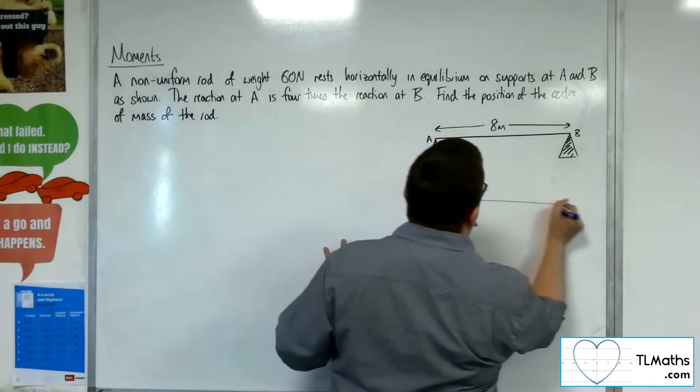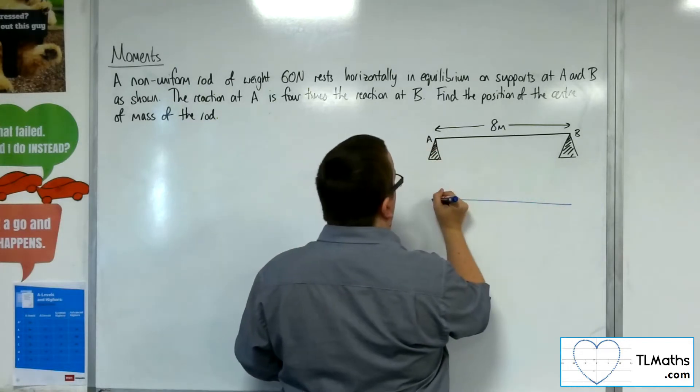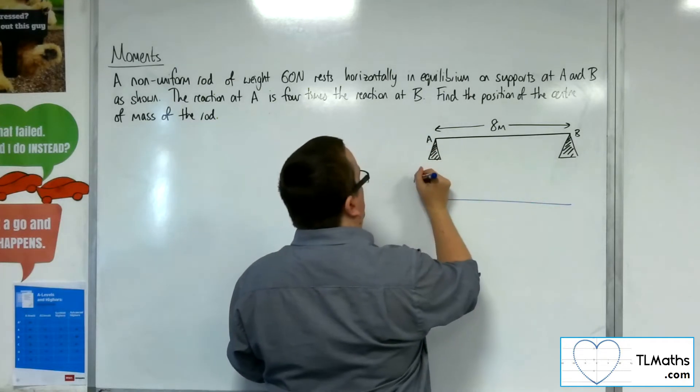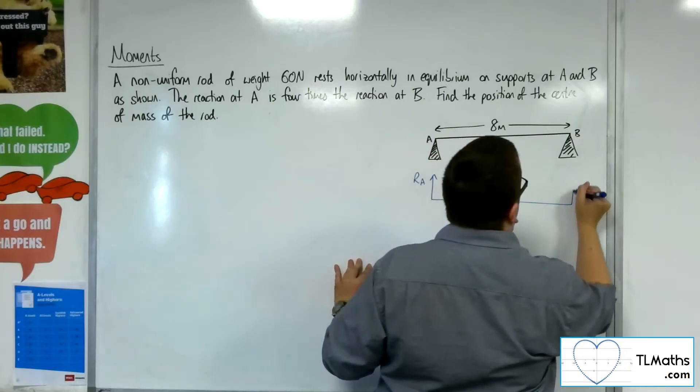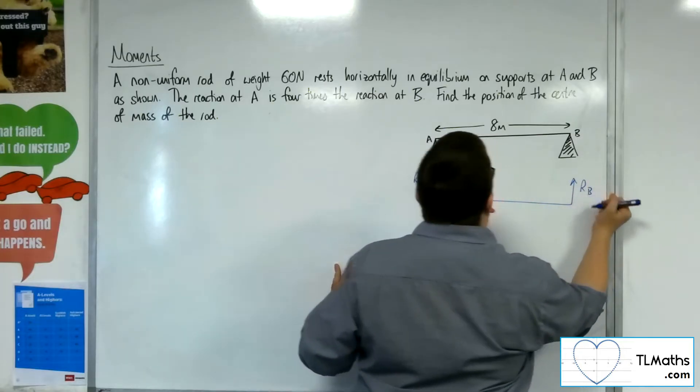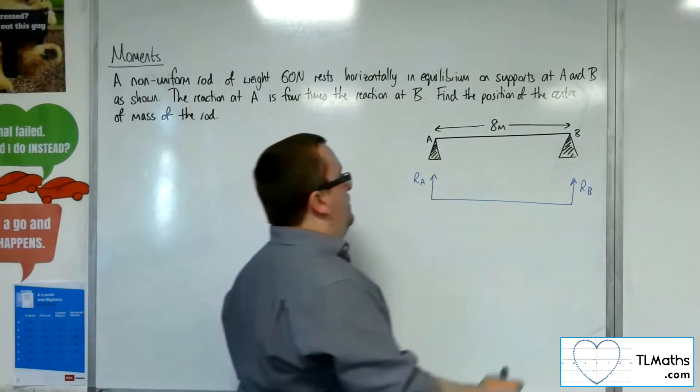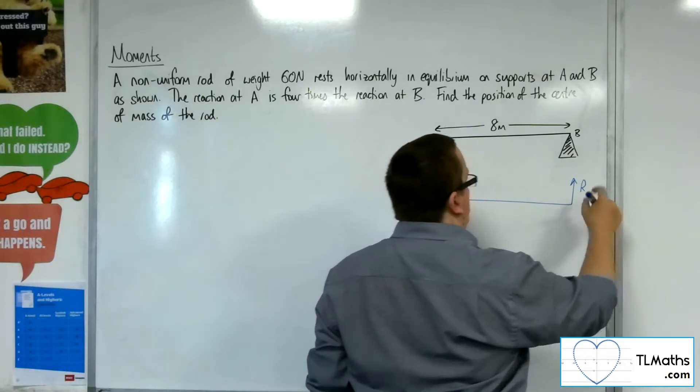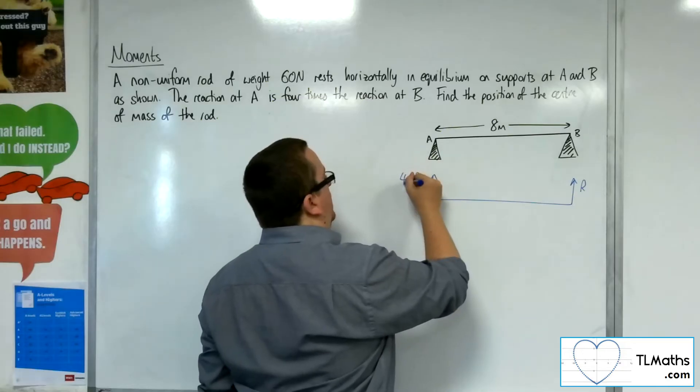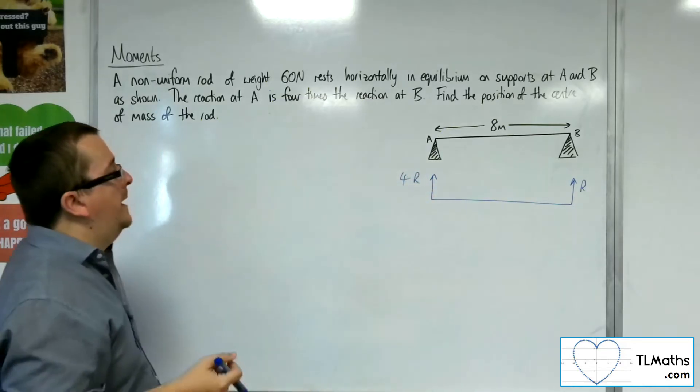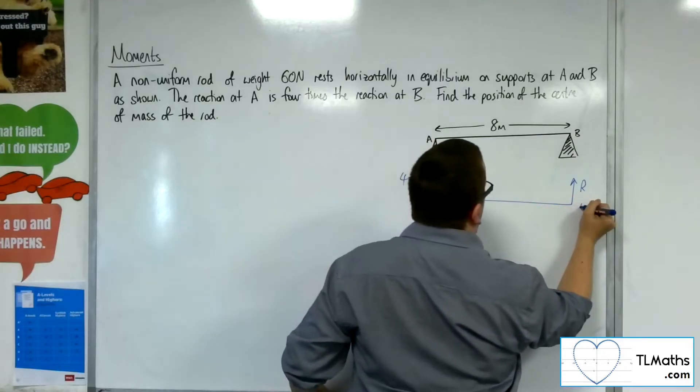So if we draw a force diagram so we can see what's going on, we've got the normal reaction force at A, the normal reaction force at B. Now we are told that the reaction at A is four times the reaction at B. So if we call that just R, then this will be 4R. Okay, so here's A and here's B.